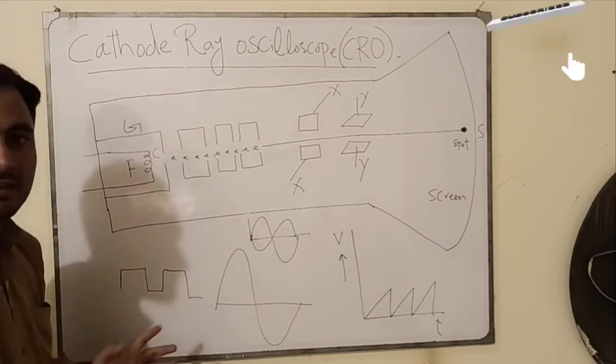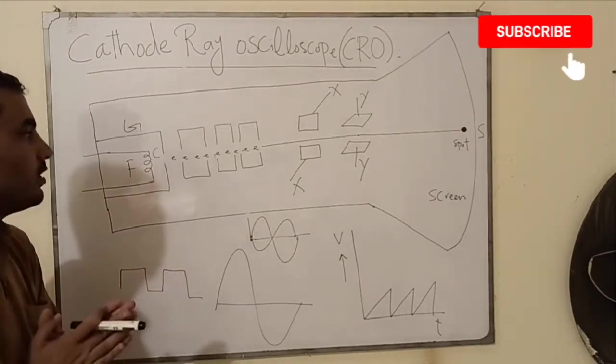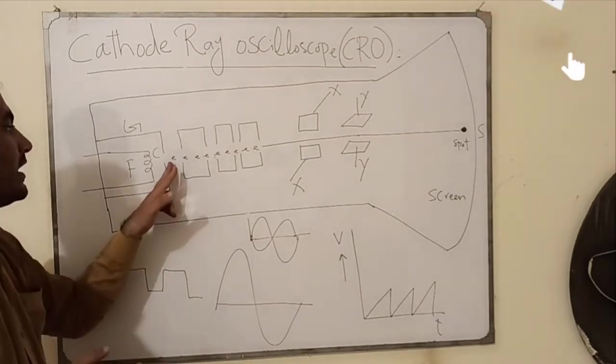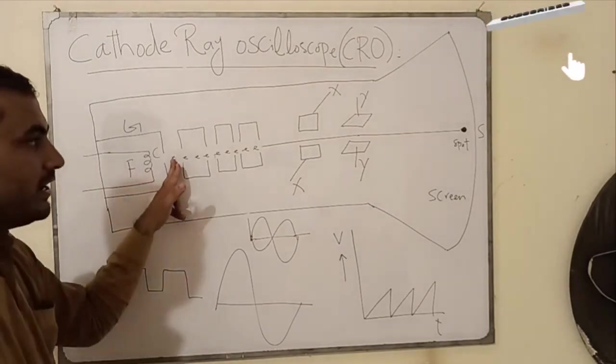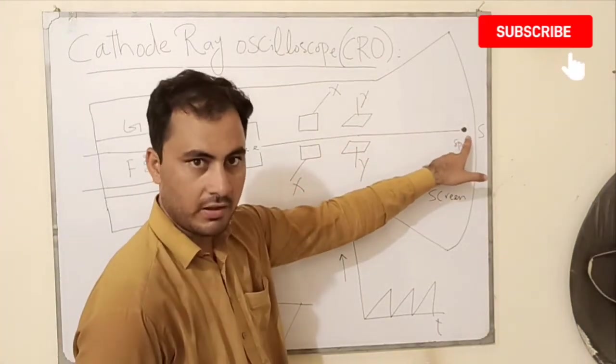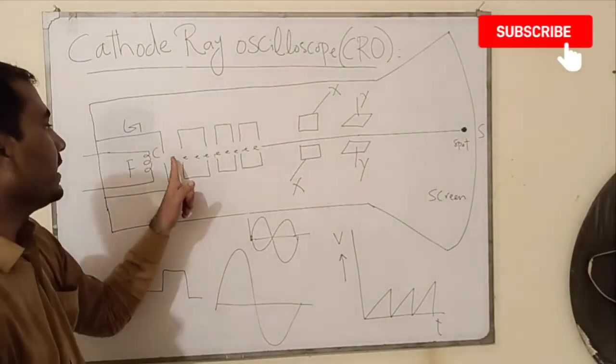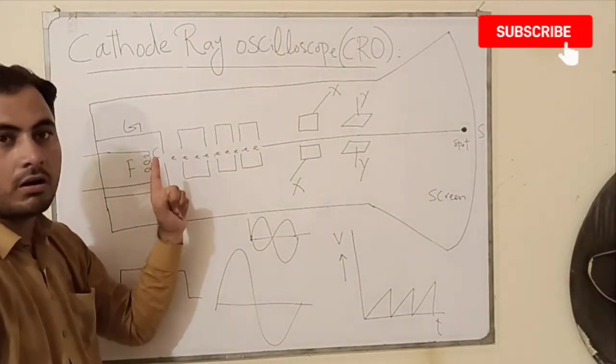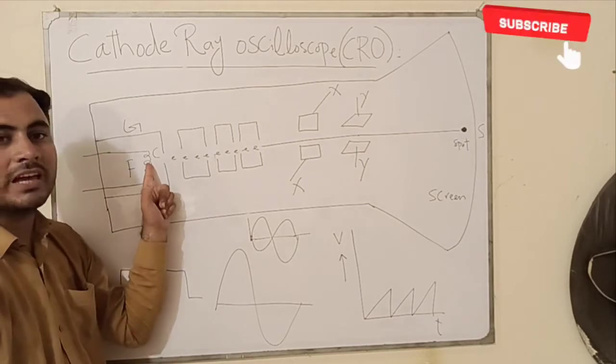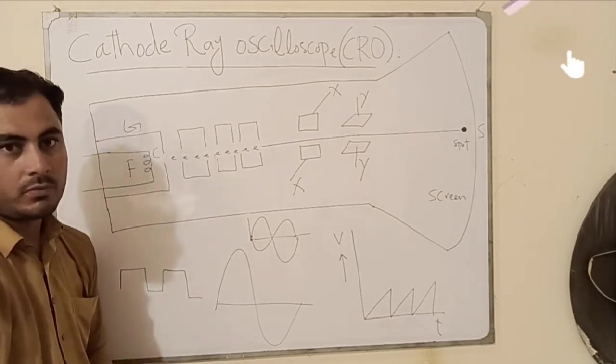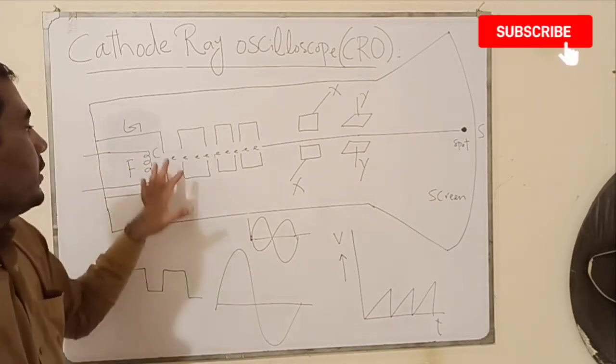Basically grid is a negatively charged potential with the help of which we can control the brightness of the spark on screen, as well as we can control the number of electrons that are emitted from cathode or filament.